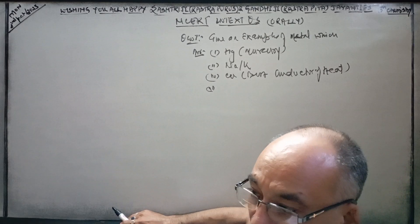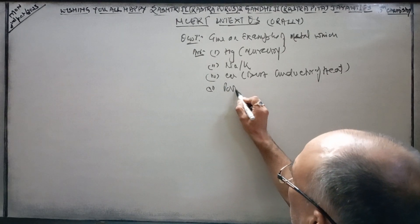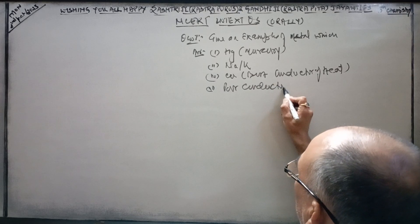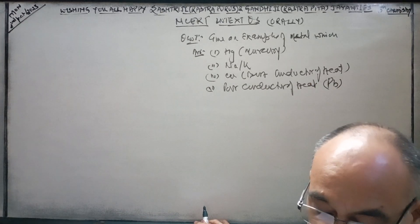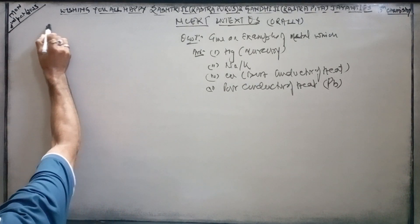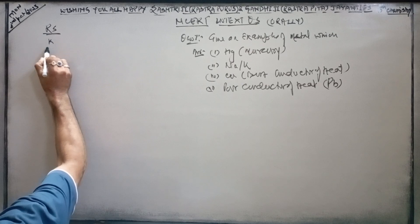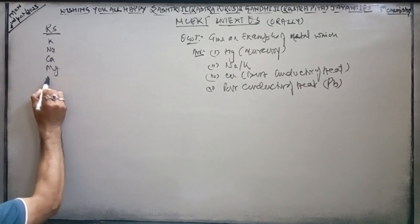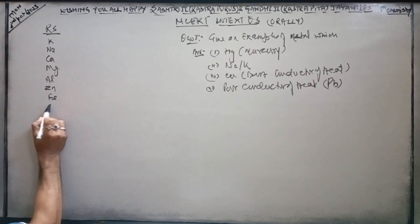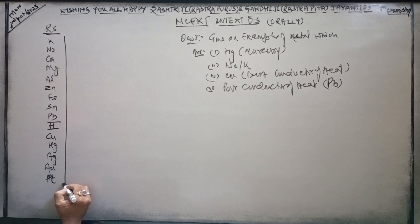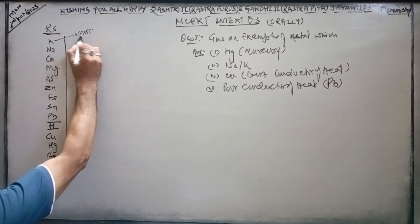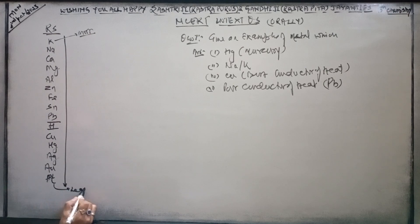And the fourth one is a poor conductor of heat. That will be lead, Pb. Have you heard the name? Now keep the reactivity series in your mind: K, Na, Ca, Mg, Al, Zn, Fe, Pb, Cu, Ag, Au.